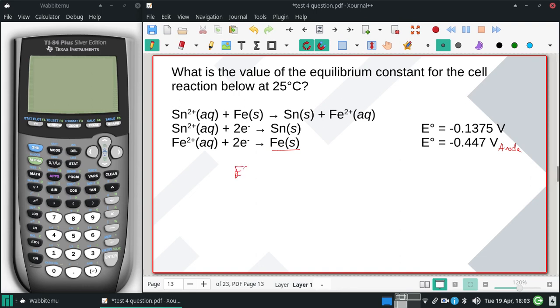So our E° for the cell is going to be that negative 0.1375, the cathode. And then we will add the inverted sign of our anode, so it would be a positive 0.447.